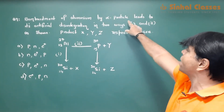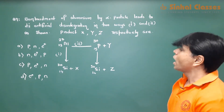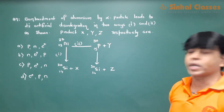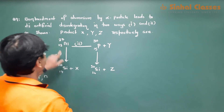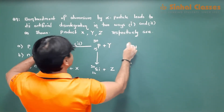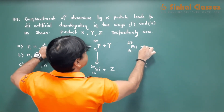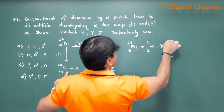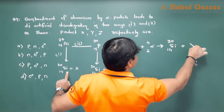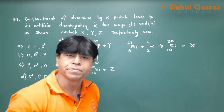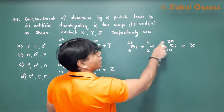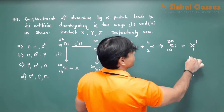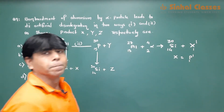Bombardment of aluminium by alpha particle leads to the following disintegration, and you have to find x, y, z. In the first case, aluminium-27-13 bombarded with alpha particles forms silicon-30-14 and x. Mass number: 27 plus 4 equals 31; here 30, so it should be 1. Atomic number: 13 plus 2 equals 15; 14 is 1. So x is a proton.